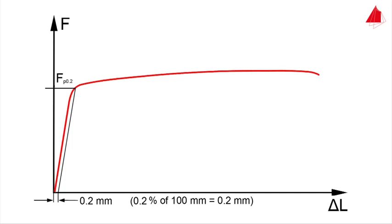This is the force that causes a plastic strain of 0.2 percent. The 0.2 percent proof strength Rp0.2 is equal to Fp0.2 divided by the original cross-sectional area S0.